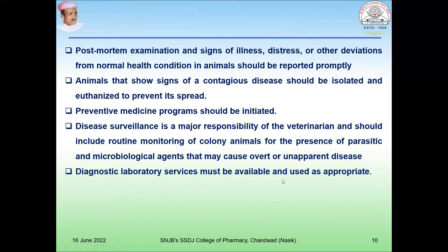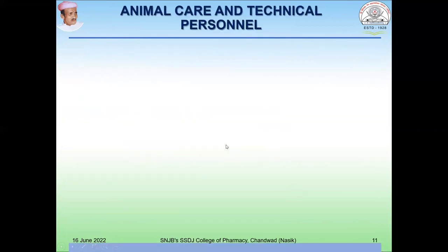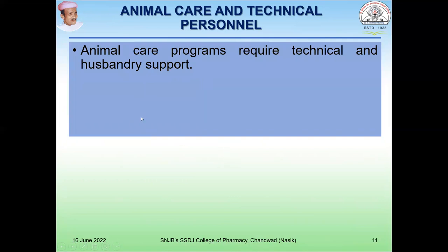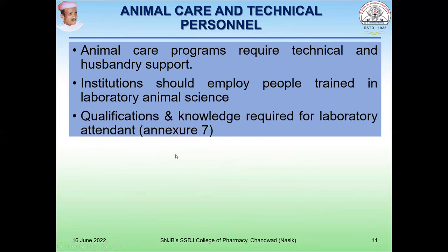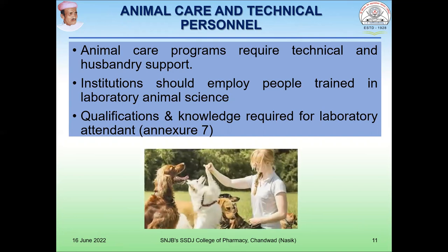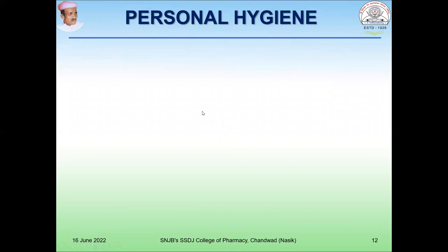Diagnostic laboratory services must be available and used as appropriate for easy diagnosis of animal health. The diagnostic laboratory is recommended to be near the animal house. Regarding animal care and technical persons, the animal care program requires technical and husbandry support. The institute should employ people trained in laboratory animal sciences. The animal house in-charge and persons caring for animals should have experience and training in laboratory animal sciences. The qualifications and knowledge required for laboratory attendants are given in Annexure 7 of the CPCSEA guideline, available on the CPCSEA website.